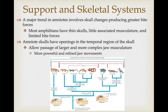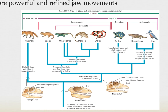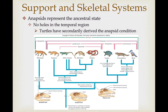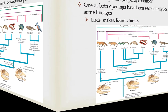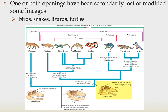Another skeletal trend in tetrapods is a change in the skull to give greater bite forces. Amphibians have relatively thin skulls with limited musculature and bite forces, similar to most fishes. Amniote skulls, however, have openings in the temporal region of the skull that allow passage of larger, more complex jaw muscles for more powerful and refined jaw movements. The anapsid condition represents the ancestral state — a skull without holes in the temporal region. Turtles show the anapsid condition, but this appears to be a secondary derivation. The diapsids have two holes on each side of the skull — this is the ancestral reptilian condition. In subsequent lineages, one or both of these openings have been secondarily lost or significantly modified.